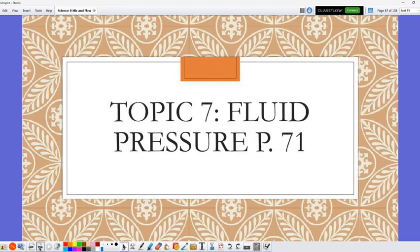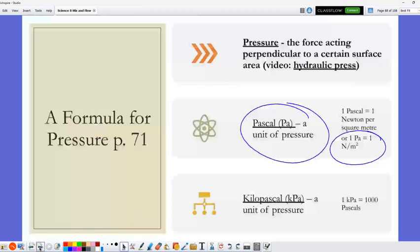Topic 7 deals with fluid pressure. Pressure is force acting perpendicular to a surface area, and the units for pressure is the Pascal, which is equal to 1 Newton per meter squared. Or kilopascal is 1,000 Pascal, so that's for really big pressures.